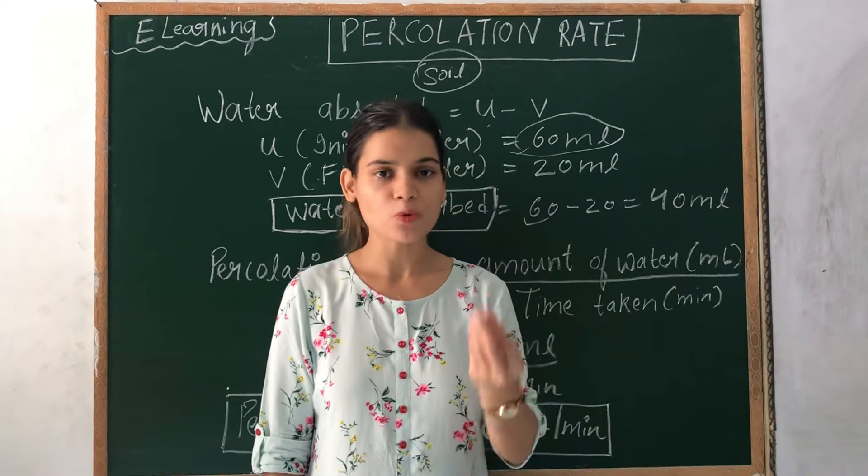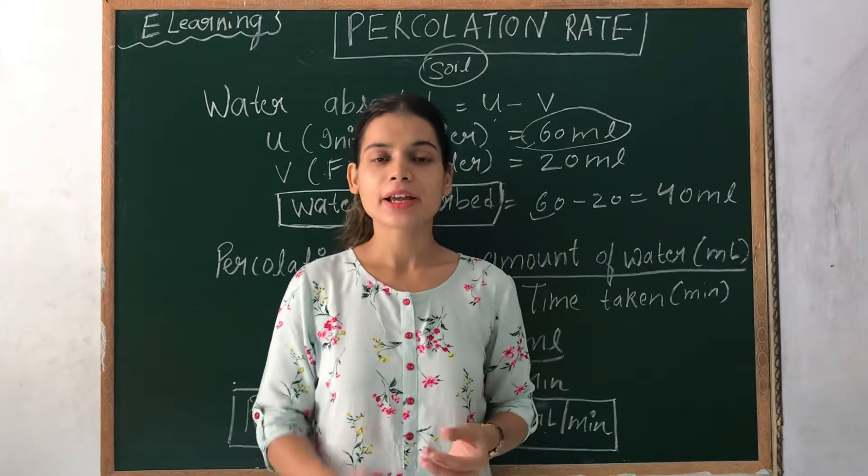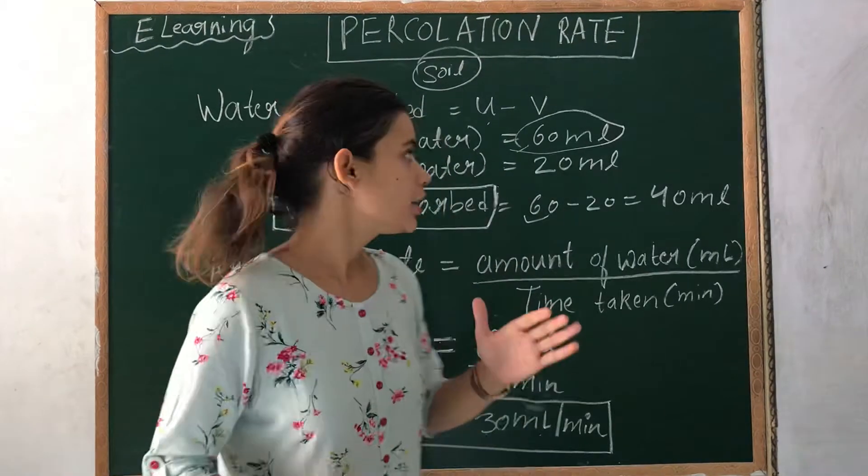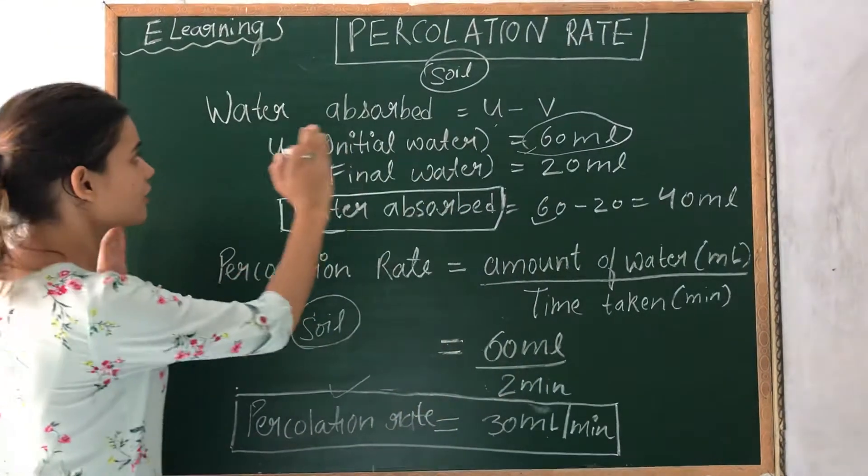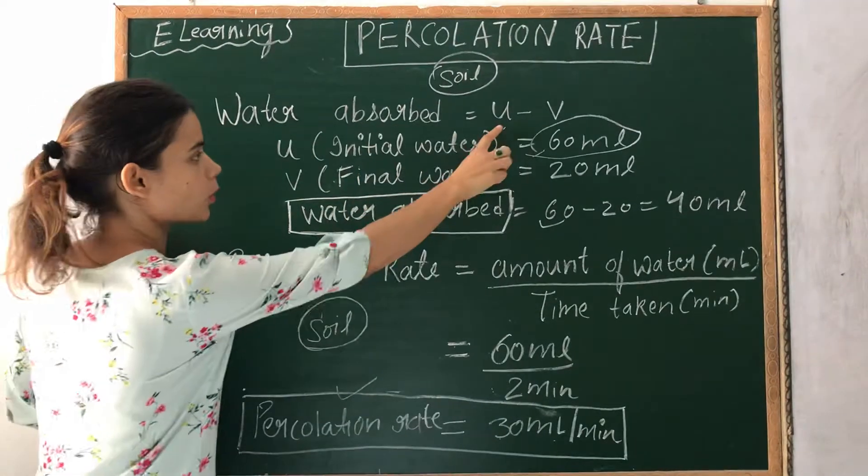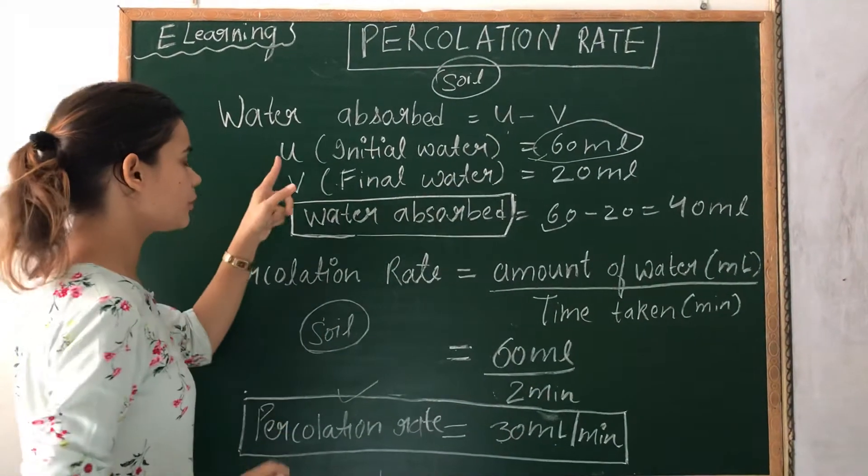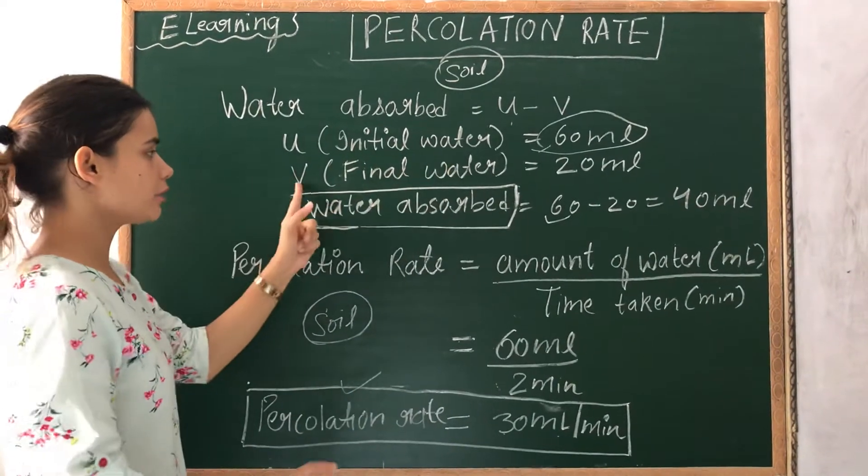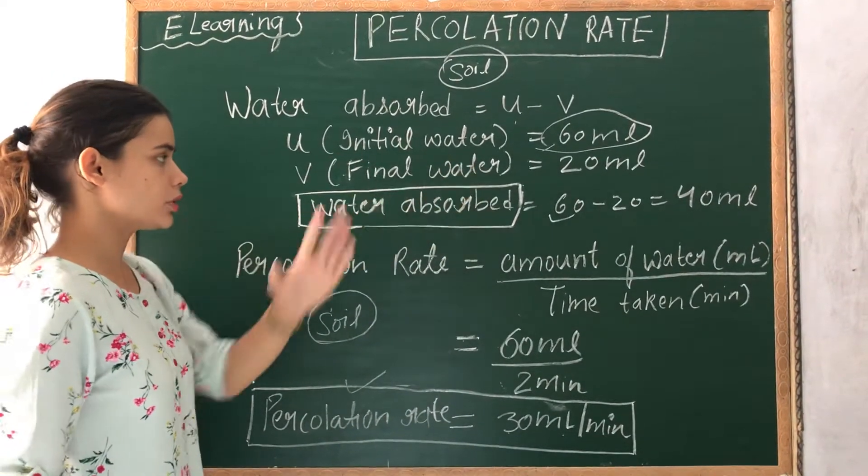Let us calculate the amount of water absorbed by the soil and also calculate the percolation rate. We can find out the water absorbed by the formula U minus V, where U is the initial water that was taken and V is the final water that we received after percolation.